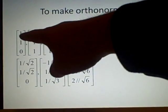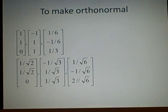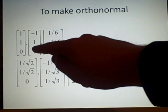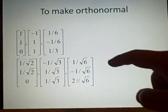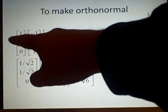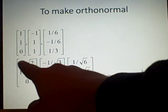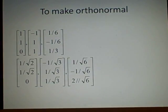So, for this one, we have 1 dot 1, so it's 1 times 1, which is 1, 1 times 1, which is 1, 0 times 0, which is 0, which is 2, and we divide by the square root of that, so our first one is root 2, root 2, 0.